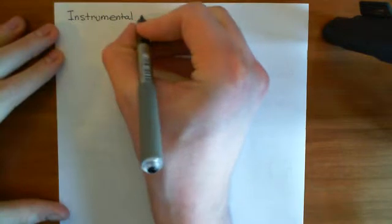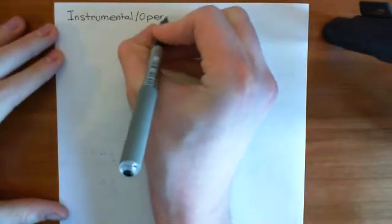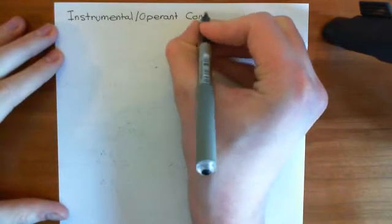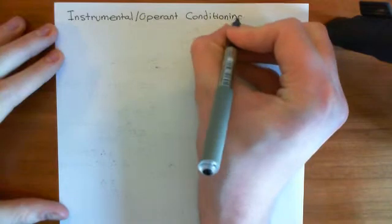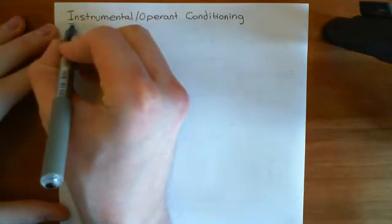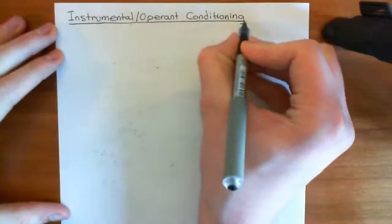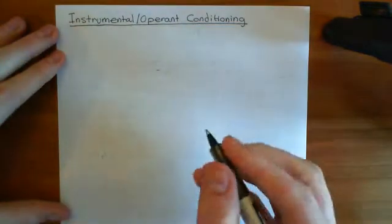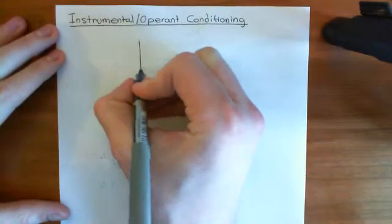So, instrumental or operant conditioning. As with Pavlovian conditioning, I'm going to start off by telling you a story and then we'll come back and see what lessons we can learn from it. Basically, in this experiment you're going to take a rat — a hungry rat — and put it in a box.